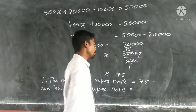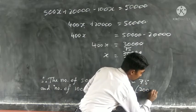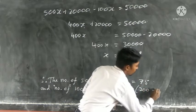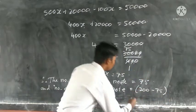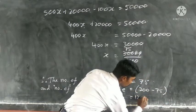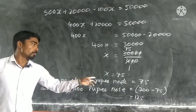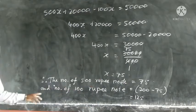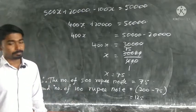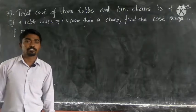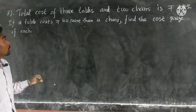The number of 100-rupee prizes is equal to 200 minus x, that is 200 minus 75, which is 125. Therefore, the number of 500-rupee prizes is 75 and the number of 100-rupee prizes is 125.